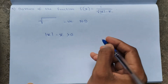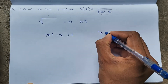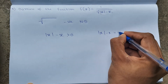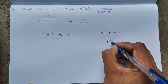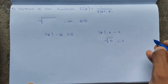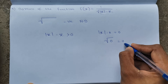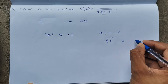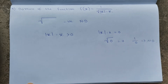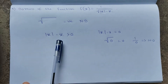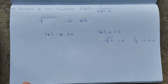If |x| - x equals 0, then √0 = 0, making the denominator 0 and the numerator 1, so 1/0 is not defined. Therefore, in the denominator we should not get any negative value or zero. Compulsorily, |x| - x must be greater than 0.